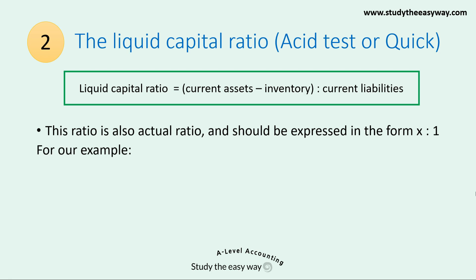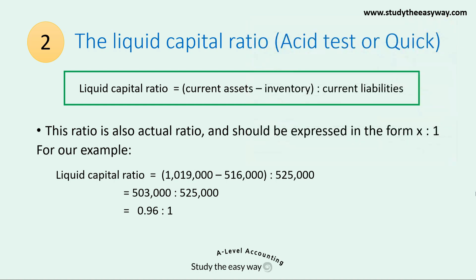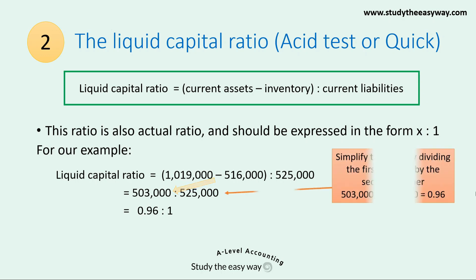Let's look at our example again. The first thing to do is to write down the total current assets of 1,019,000 and deduct from this the inventory of 516,000. We then put in the comparison sign and the total current liabilities of 525,000. Doing the subtraction: 1,019,000 less 516,000 equals 503,000. We then simplify the ratio by dividing the first number by the second: 503,000 divided by 525,000 equals 0.96.